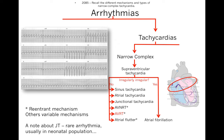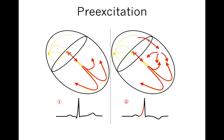AVRT — atrioventricular re-entrant tachycardia — relies on a second pathway going to the ventricle, but outside the AV node. Most of us have only one pathway from the atria to the ventricles within the AV node. Some are born with an extra congenital accessory pathway going from the atria to the ventricle. It can be asymptomatic for a lifetime, or it can present with arrhythmia. It can occur on either side of the heart. Because signals go down both the AV node and the accessory pathway, there are two routes from atria to ventricles, creating a potential for re-entry.